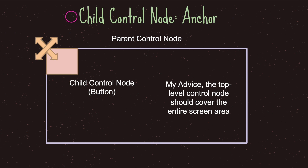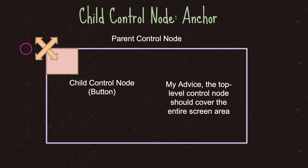In order for anchor to work, it must have a parent control node with a position and size. As you can see here, the big rectangle is our parent control node, and our child control node is just a simple square button. My advice is that the top level control nodes should cover the entire game screen area the player is able to see. This cross-like symbol is our anchor, which by default starts at the top-left of the parent control node.